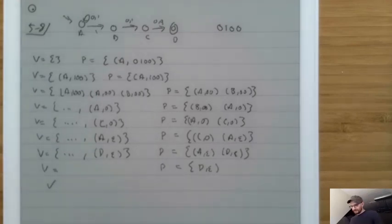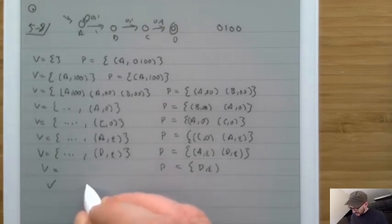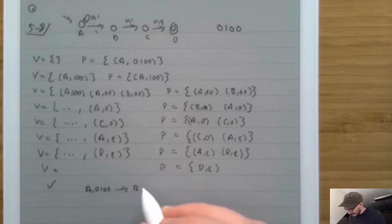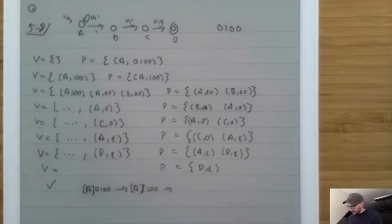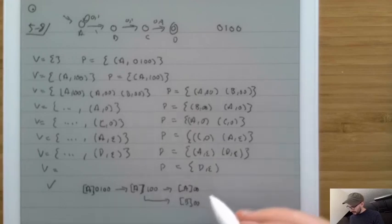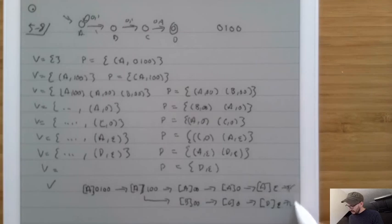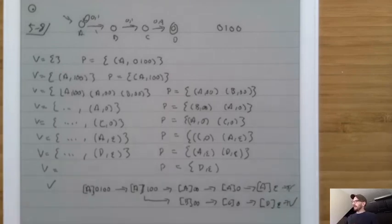So that's the whole execution of the algorithm. This backtracking model of exploring NFAs is a way of determining if something is accepted by an NFA. This is a good place to break.